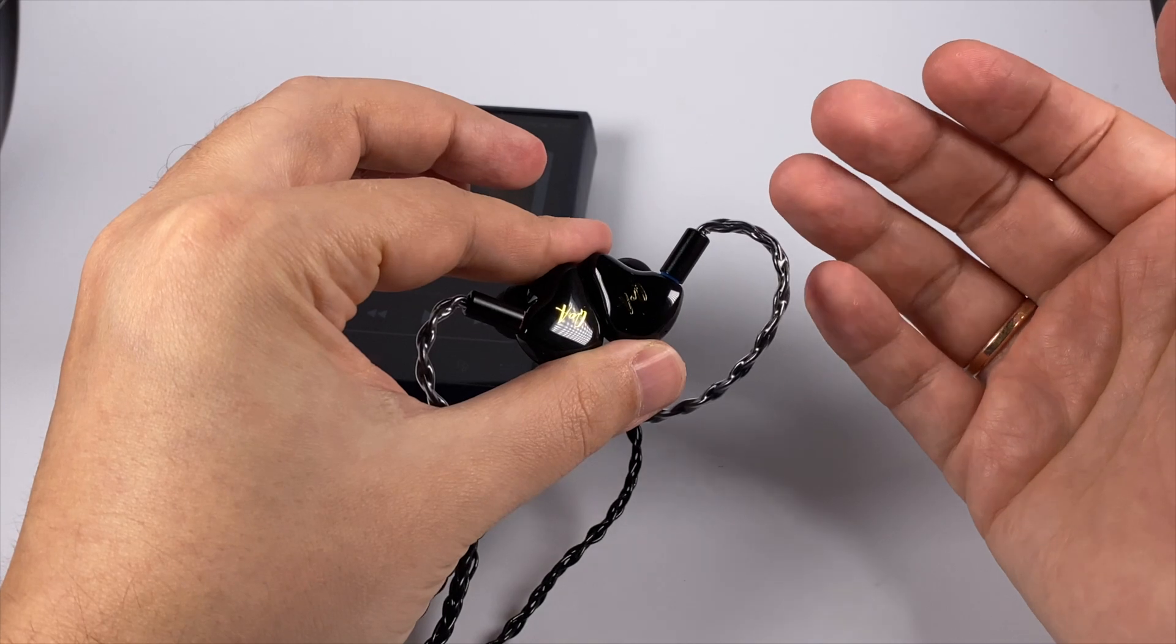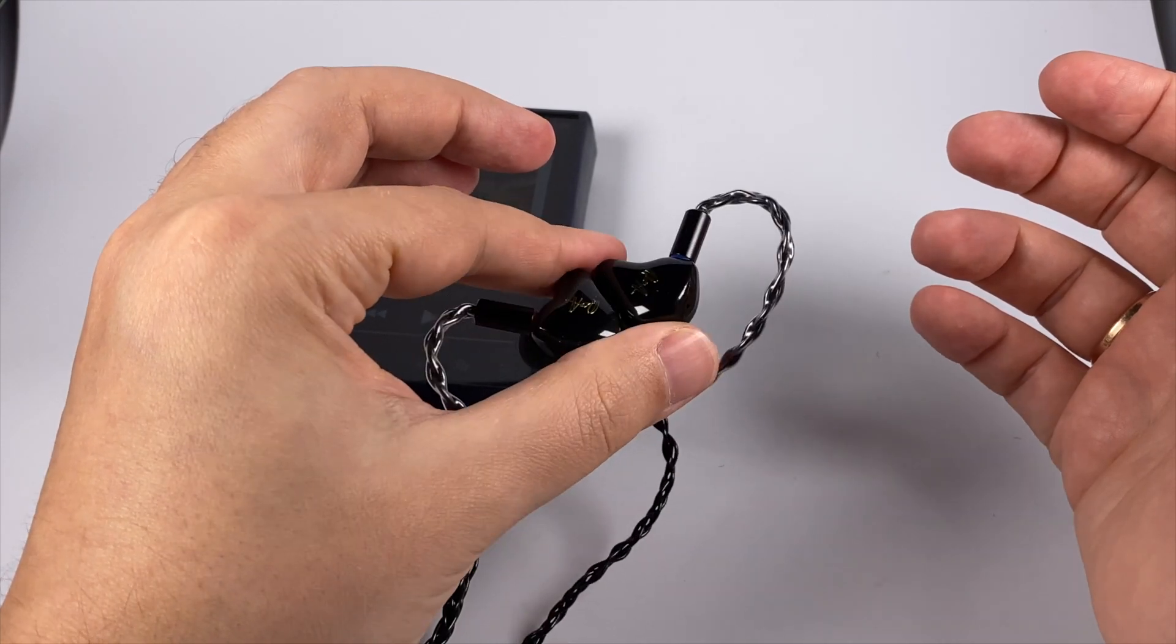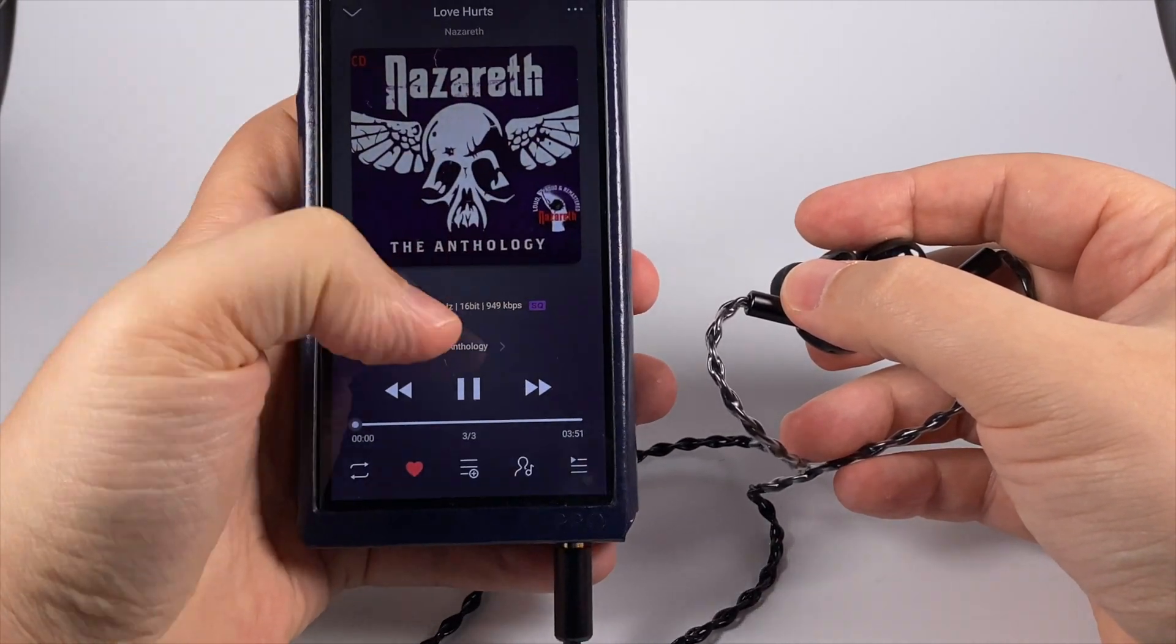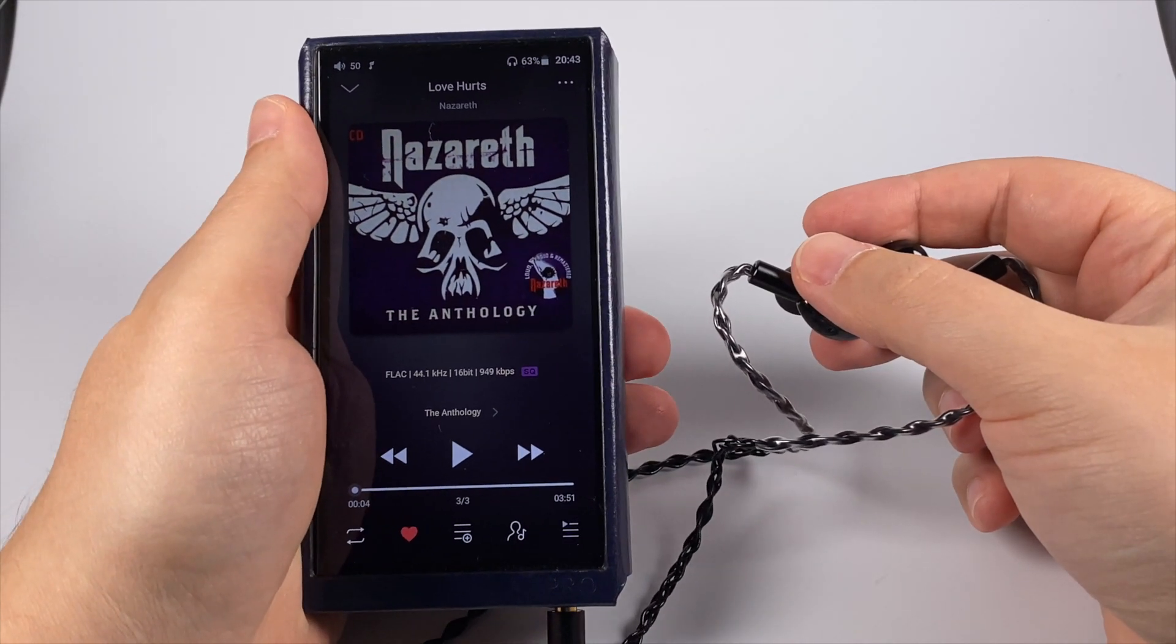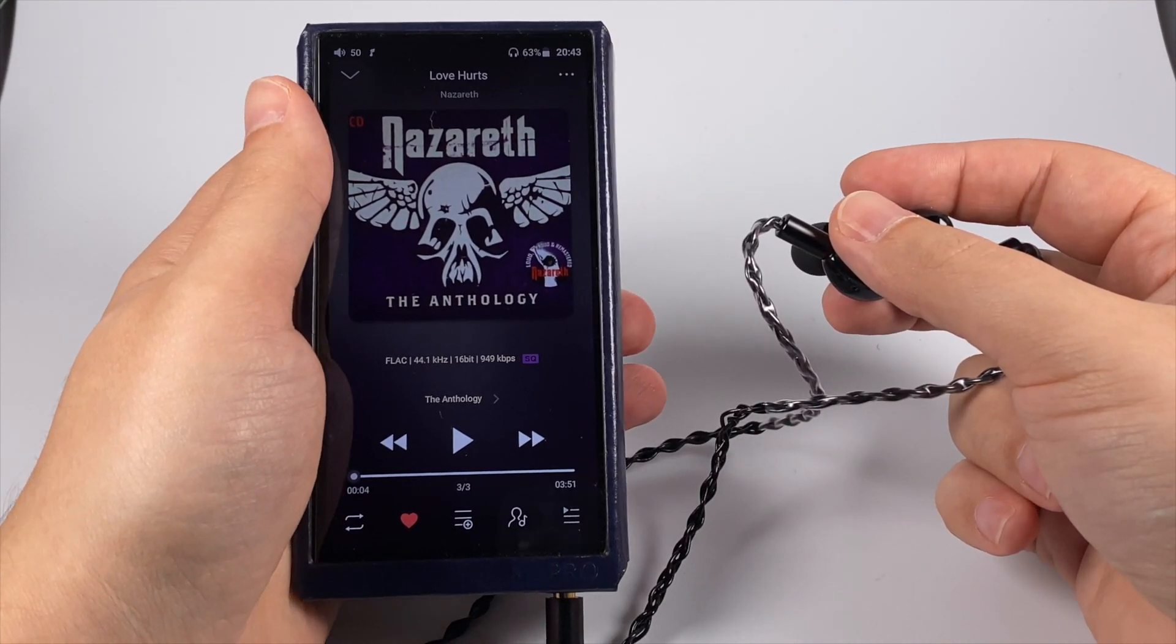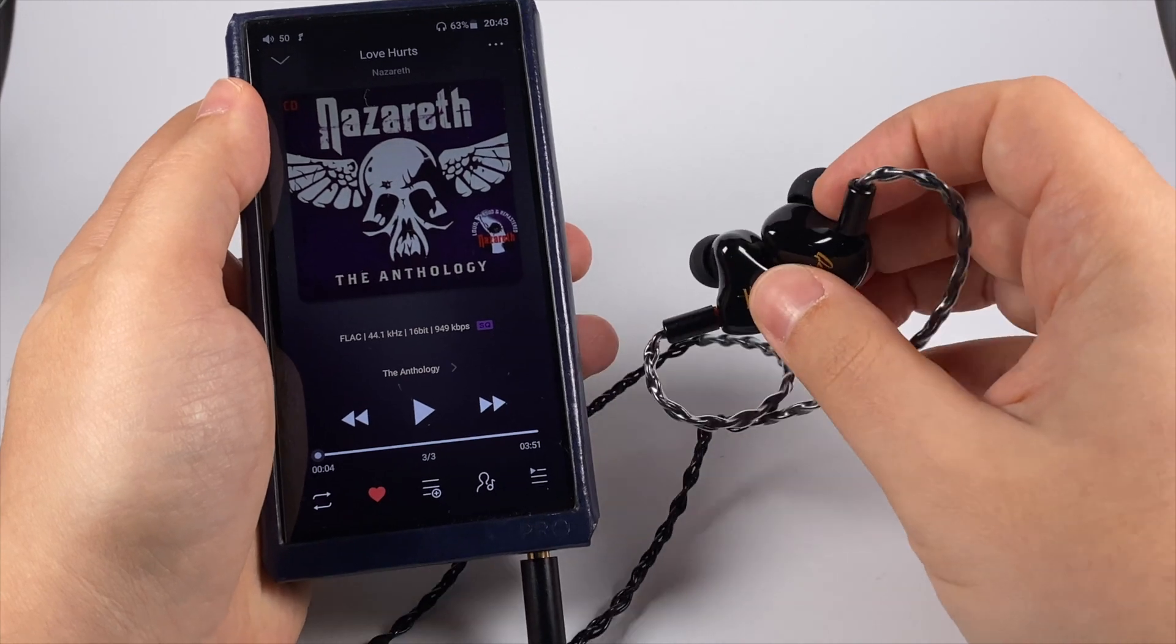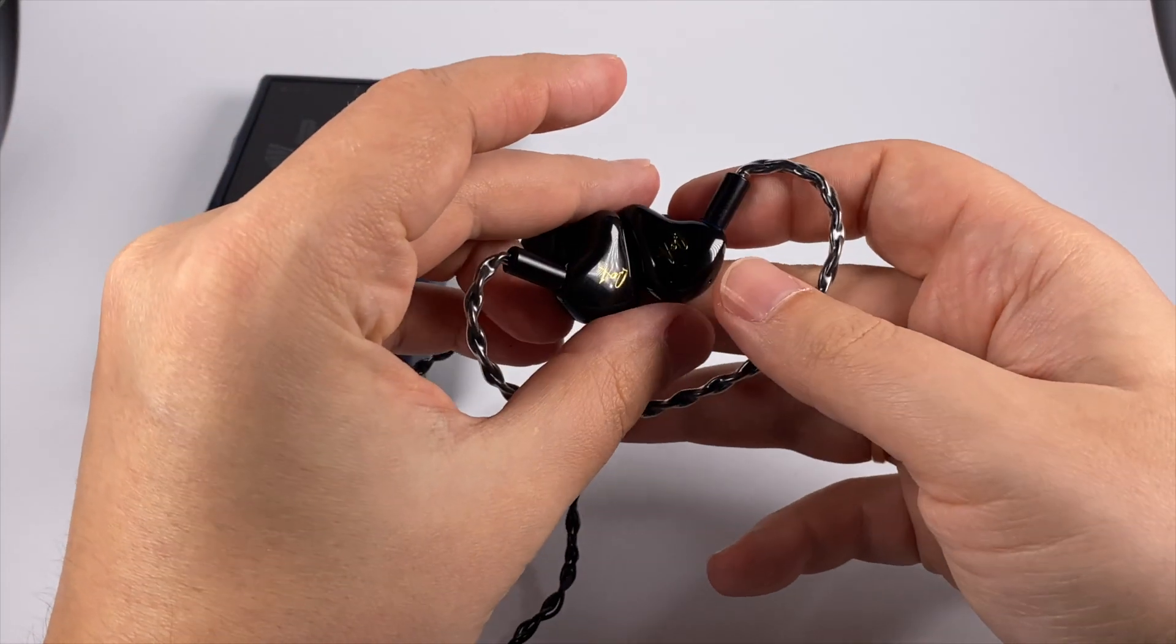And as an example for this part of sonic spectrum, I've got Nazareth, Love Hurts, their probably most famous song, and I don't know why, but actually in all recordings Nazareth like percussion, they are always accenting this part, and this one is not an exception, but with these in-ear monitors percussion sounding realistic and at the same time not too bright and not too forward and it's a good news for those who don't like treble.